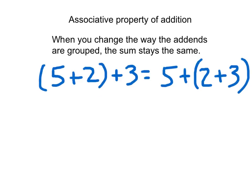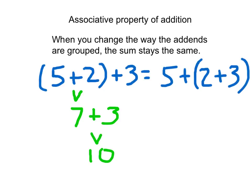The way we show grouping in mathematics is with parentheses. On the left-hand side, 5 and 2 are grouped together: (5 plus 2) plus 3. On the right-hand side, we keep the same addends but group 2 and 3 instead: 5 plus (2 plus 3). Evaluating both sides: 5 plus 2 is 7, plus 3 equals 10; and 2 plus 3 is 5, plus 5 equals 10. So this associative property of addition is true — the sum stays the same.